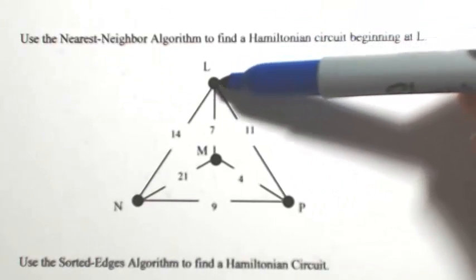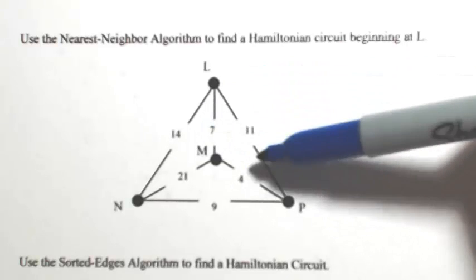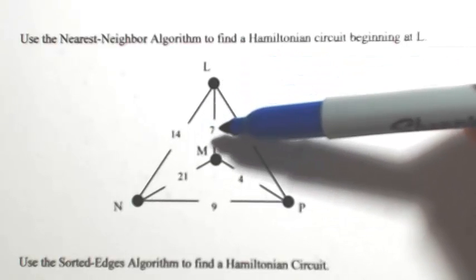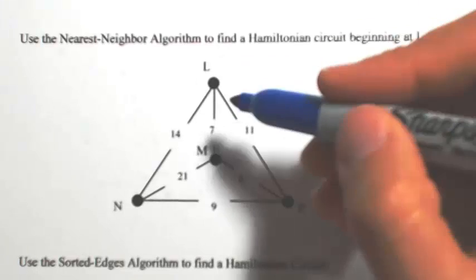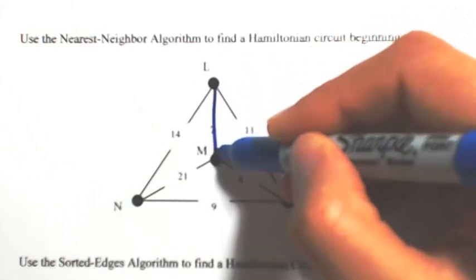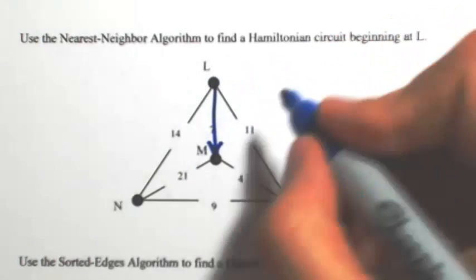So from L I can either go 14, 7, or 11. So because 7 is the shortest of the 3, I'm going to go to M. Okay, so that's a 7.